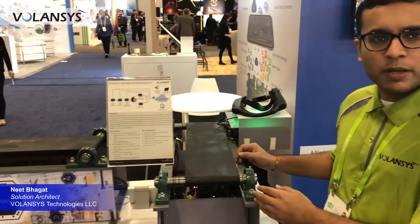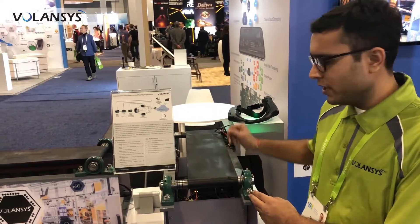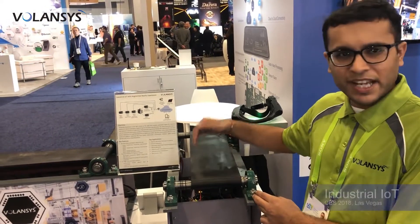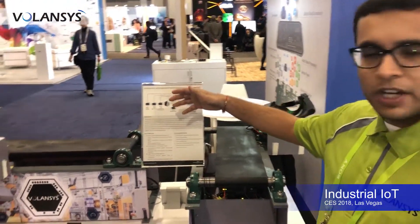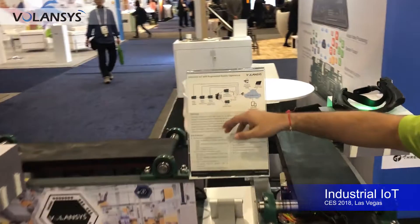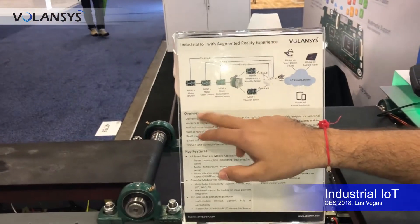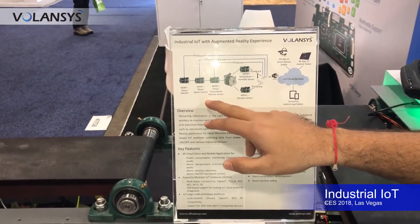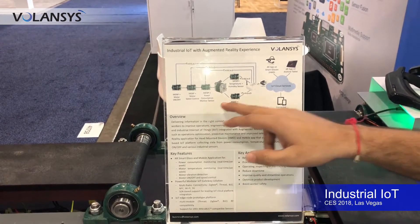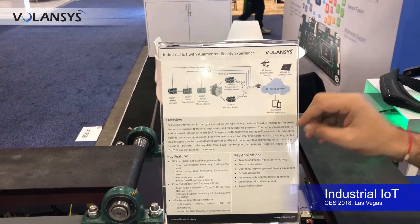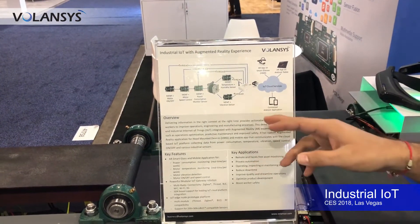We have a simulated motor control assembly here, which has multiple sensors attached to it. It has three controls: motor on-off and motor speed control. Sensors include power consumption monitoring, temperature and humidity, and vibration sensors.